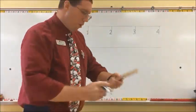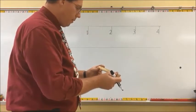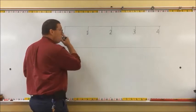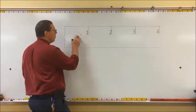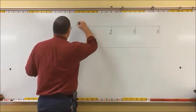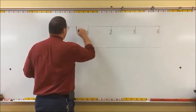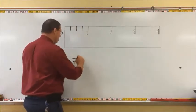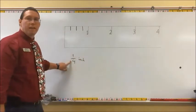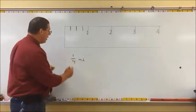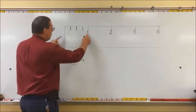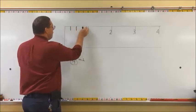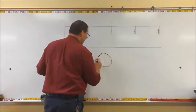Did you know that on a ruler, the size of the fraction is indicated by the length of the hash mark? The first way an inch is broken up is usually into one-fourth of an inch. So we draw a hash mark there, there, and there. One-fourth of an inch means you've taken the inch and broken it up into four pieces - like taking a cake and cutting it into four equal pieces. That is one out of four, or one-fourth, and this is one-fourth of an inch.